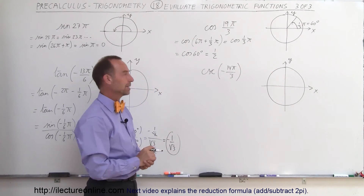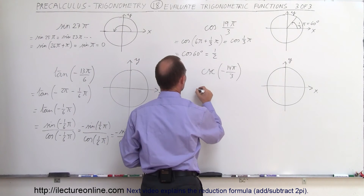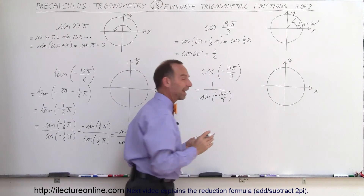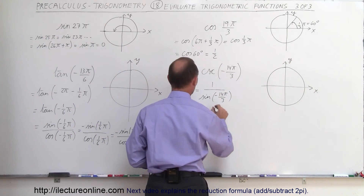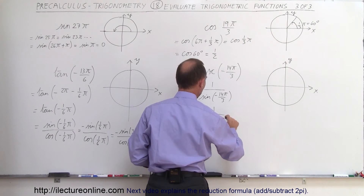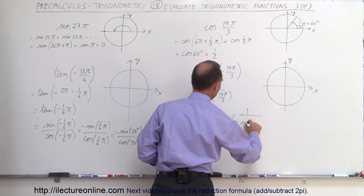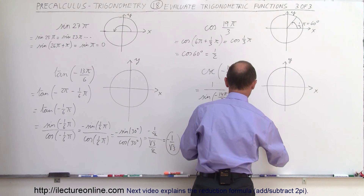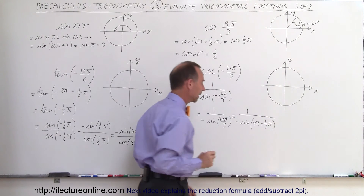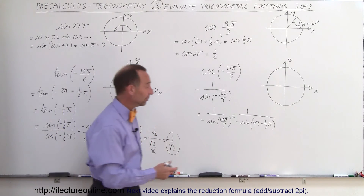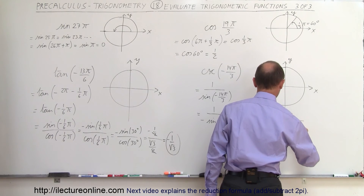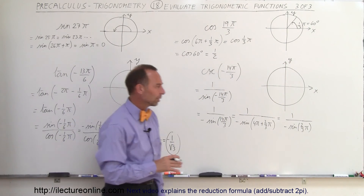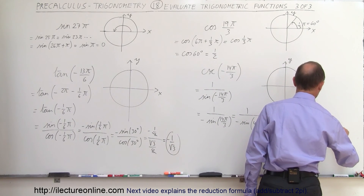The cosecant of minus 14π/3: the cosecant can be rewritten as 1 over the sine, so this equals 1 over the sine of minus 14π/3. The sine of a negative angle is the negative of the sine of that angle, so this equals 1 over negative sine of 14π/3. Writing as a mixed number, 3 goes into 14 four times, giving 4π plus (2/3)π. The sine of 4π is the same as the sine of 0, so this becomes 1 over minus the sine of (2/3)π — any multiple of 2π is dropped. Since (2/3)π equals 120 degrees, this is 1 over minus the sine of 120 degrees.